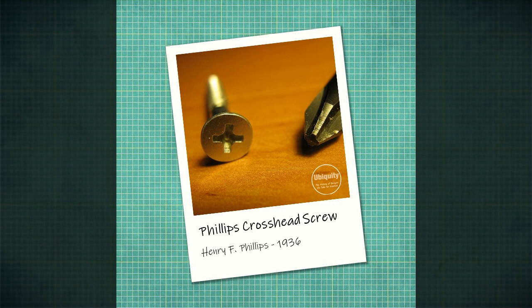Negotiations began with a view to Ford licensing Robertson's screws for use in all of his car plants. However, Ford wanted a degree of control over production that Robertson was not willing to accept, and the deal fell through, losing Robertson his contract for the Canadian Ford plants. As a result, while Robertson's screws remained popular in Canada, they failed to take off in other parts of the world.